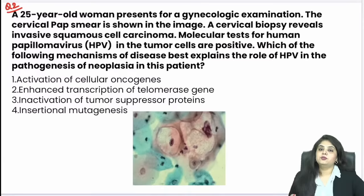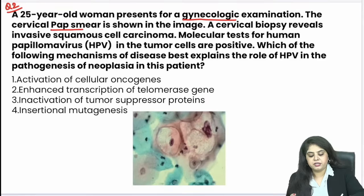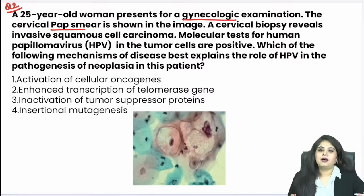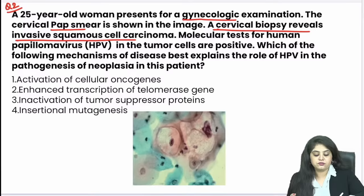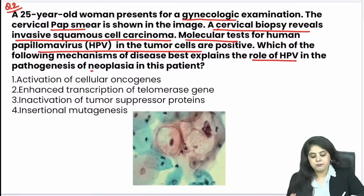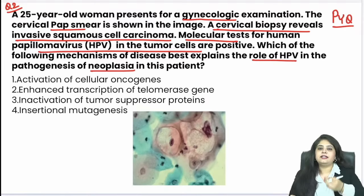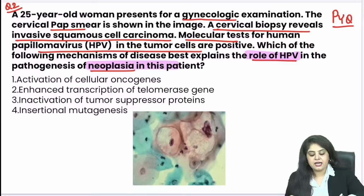Moving to question 2, which has made a hat-trick in all exams. You have a 25-year-old woman coming for her gynaecological examination. A pap smear is done, and after that a biopsy reveals that at this young age she has an invasive squamous cell carcinoma. Molecular tests for HPV are positive. How does HPV have a role in the pathogenesis of neoplasia? This is a PYQ, made slightly longer. Most of you have answered correctly: by inactivation of tumour suppressor genes.